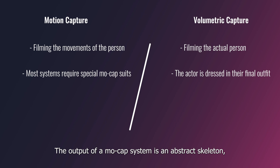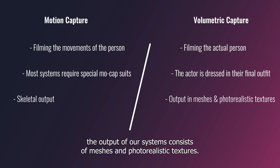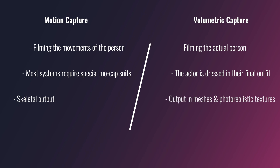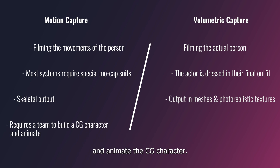The output of a mocap system is an abstract skeleton, which is then transferred to a CG character. On the other hand, the output of our systems consists of meshes and photorealistic textures. And lastly, once the mocap is done, a team needs to build and animate the CG character.